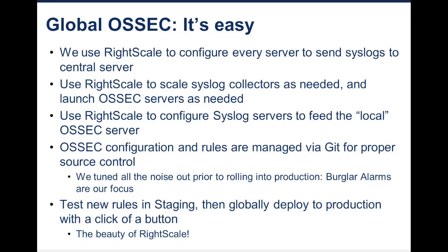That lets us test in our test environment. We can do some generalized alerting. There are things we know because of our platform — those burglar alarms — that these things shouldn't happen. Writing custom rules and knowing your environment is key. And because we use GitHub, we can test these rules in staging. We have separate production, dev, and test environments where we can run rules and see what the signal-to-noise ratio is going to be, and tune them before deploying to production.